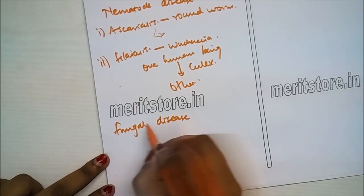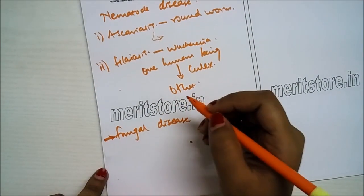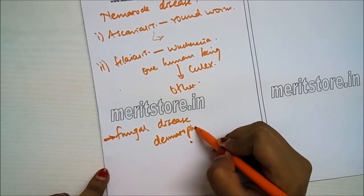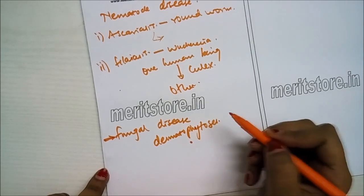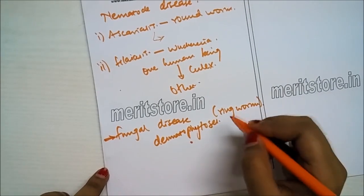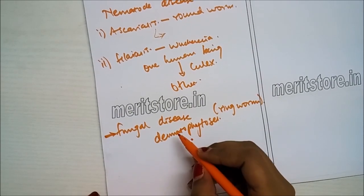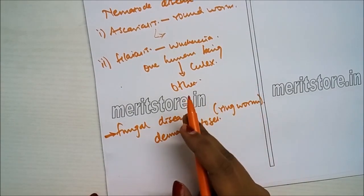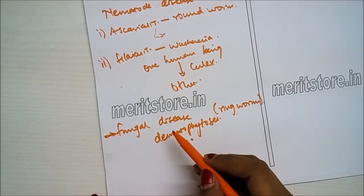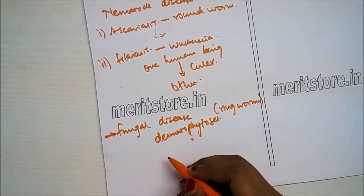Fungal diseases: Dermatophytes are a group of closely related fungi that infect the skin, hair and nails, causing a variety of conditions collectively called dermatophytosis. Dermatophytes include three genera: Trichophyton, which infects skin, hair and nails; Microsporum, which attacks hair and skin but not the nails; and Epidermophyton, which infects skin and nails but not the hair. The main symptoms of the disease are appearance of dry, scaly lesions on various parts of the body — skin, nail, scalp — accompanied by intense itching.